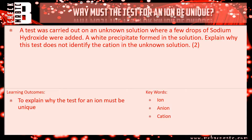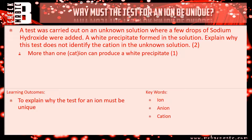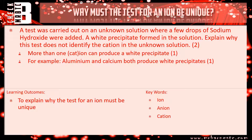Okay, let's go through. You've got a white precipitate. The key thing here is that more than one ion or more than one cation can produce a white precipitate — that gets you one mark. Then for a bit more detail, specifying which ones in particular: aluminium and calcium both produce white precipitates. That gets you two marks.